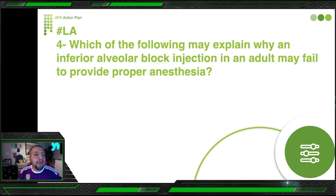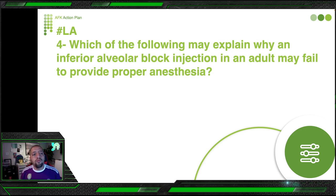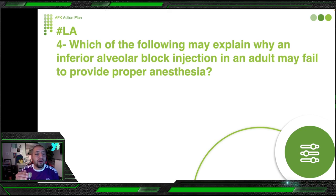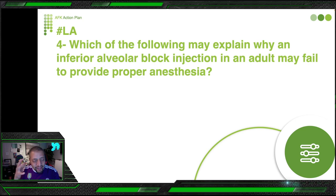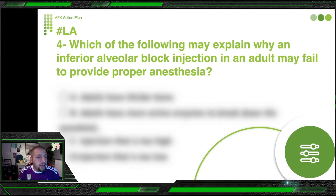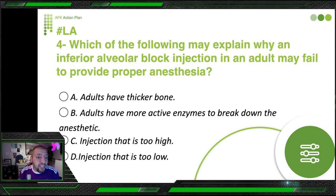Next question from local anesthesia: which of the following may explain why an inferior alveolar nerve block injection in an adult may fail to provide proper anesthesia? Inferior alveolar nerve block is a very important topic — you will see one or two questions in the exam about technique, needle location, structures the needle passes through, how long it takes to work, how long it lasts, and pulp vs. soft tissue anesthesia duration. You should know this because it is super clinically relevant to you as a dentist.